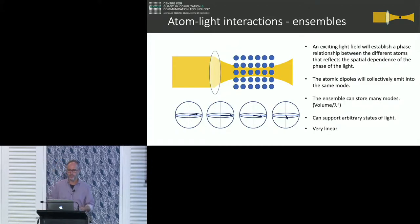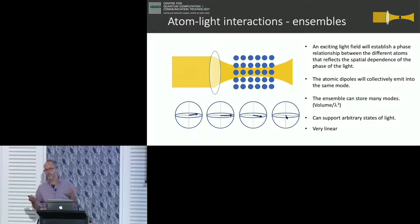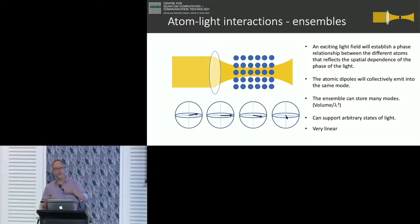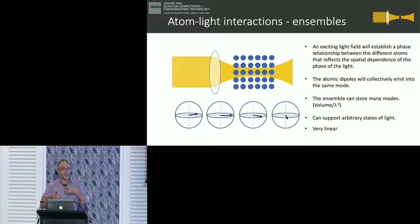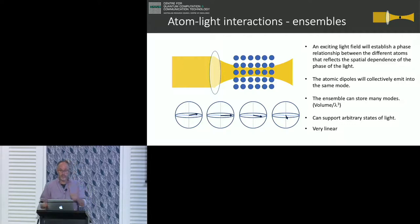I'm going to focus on the rare earth, and it turns out it's pretty hard to get to the strong coupling good cavity limit. The ensemble approach is simply: take your laser beam and shine it into a large collection of atoms. The exciting light field induces a phase relationship between all the dipoles, so if you remove the laser light those atoms continue to emit with that phase relationship, emitting straight back into the mode — giving very strong coupling between the material and the light. You need atoms which maintain their phase and don't decohere quickly.